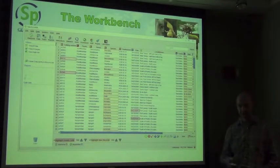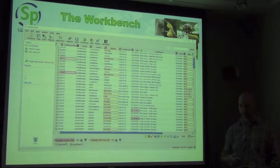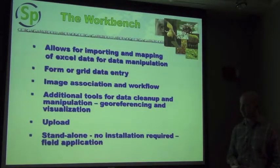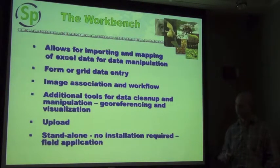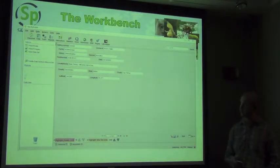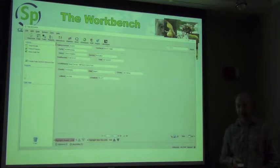Once you bring data into the system, there are validation tools built into the Workbench that validate the data against existing data in your database, so you can see whether any fields are invalid or will be newly created. There are also tools at the bottom for attaching images to rows and geo-referencing your records. You can flip across to Form View and create simple data entry forms in the Workbench specifically for simplifying the data entry process — useful when the standard forms are too complex for specific users.